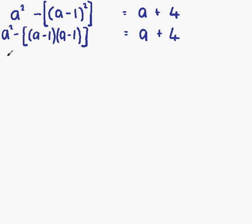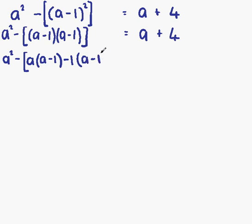So we still have a squared, our minus sign, and we open our squared brackets. Now we have a minus 1 bracket times a minus 1 bracket. Taking the first thing in bracket 1, which is a, it has to multiply bracket 2. Then the second thing in bracket 1, which is minus 1, also has to multiply bracket 2. And that is still equal to a plus 4.